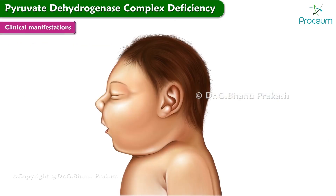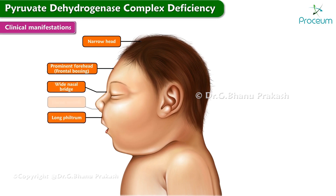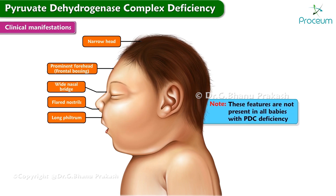Some features that may be characteristic of PDC deficiency include a narrow head, a prominent forehead or frontal bossing, a wide nasal bridge, a long philtrum, and flared nostrils. However, these features are not present in all babies with PDC deficiency.